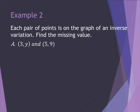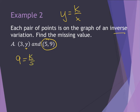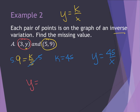For example 2, each pair of points is on the graph of an inverse variation, so y equals k divided by x. I need to find the missing value. I start with the complete data set before solving for the missing value. I have 9 equals k divided by 5. I multiply both sides by 5 and find k equals 45. So my equation is y equals 45 divided by x. For the missing y value, I plug in x equals 3: y equals 45 divided by 3, so y equals 15.